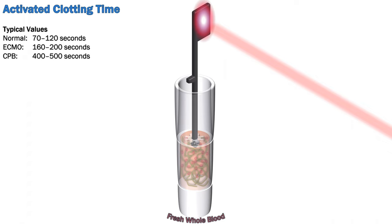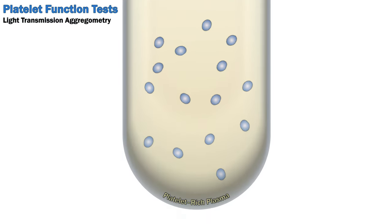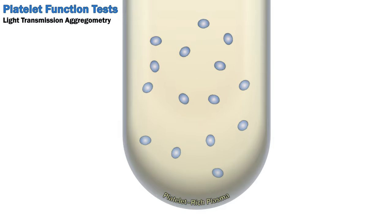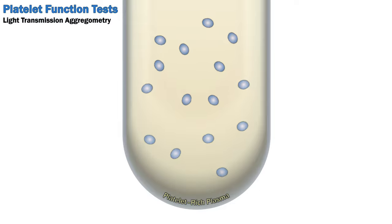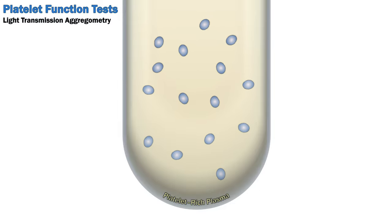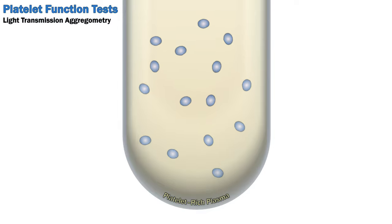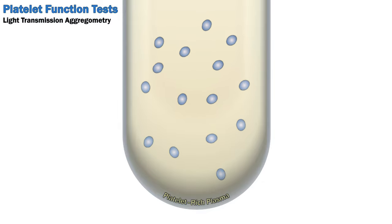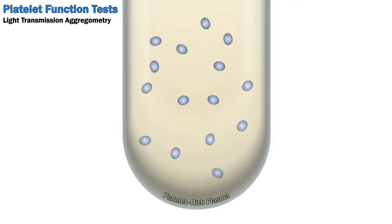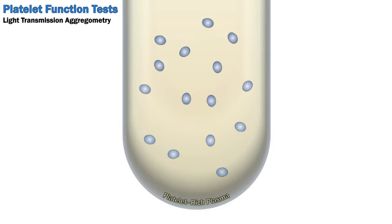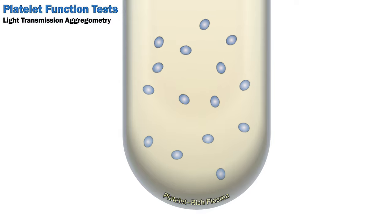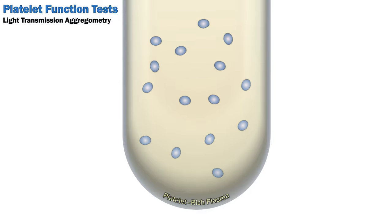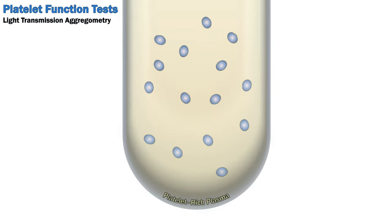Finally, we move on to platelet function tests. Thinking of our three patient groups, you're mostly going to look at these if you suspect a primary platelet disorder or the patient is on antiplatelet drugs. For the screening or secondary group, you'll probably be fine with a platelet count and a ROTEM, as there's unlikely to be a specific biochemical lesion to identify. The simplest test of primary hemostasis is the bleeding time, which just needs a lancet, a clock, and some filter paper. The gold standard for a general overview of platelet function is probably light transmission aggregometry.